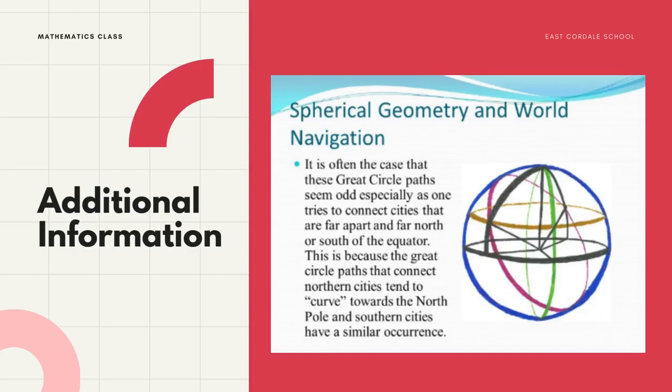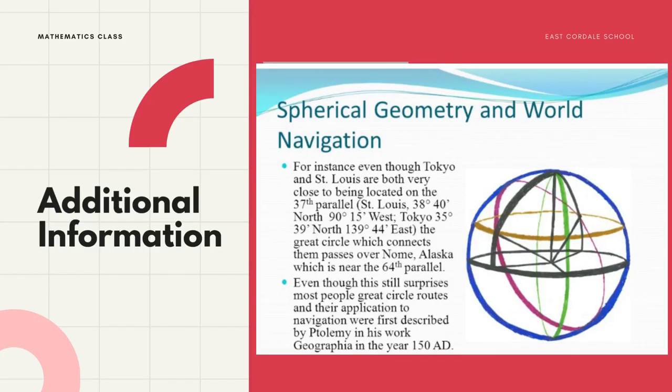As additional information, here is spherical geometry in world navigation. Great circle paths can seem odd, especially when connecting cities far apart and far north or south of the equator. Great circle paths connecting northern cities tend to curve toward the north pole, and southern cities have a similar occurrence. For instance, even though Tokyo and St. Louis are both very close to the 37th parallel, the great circle connecting them passes over Nome, Alaska, which is near the 64th parallel. Great circle routes and their implications for navigation were first described by Ptolemy in his work Geographia in the year 150 AD.